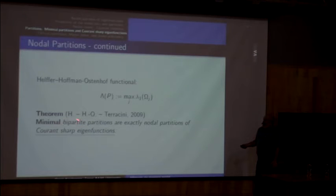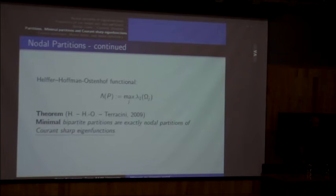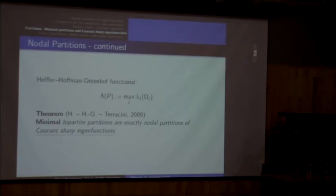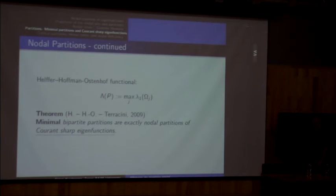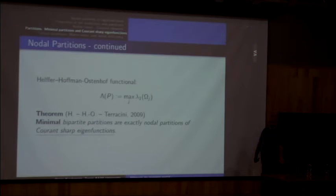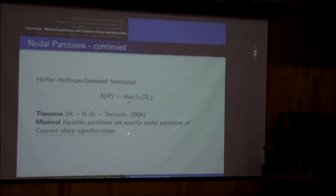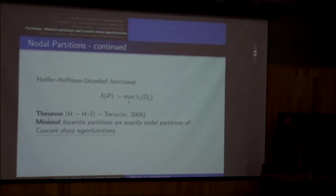They proved an amazing theorem: this functional attains its minimum on the space of partitions with a fixed number of domains. The minimum points, if they are bipartite, are exactly the nodal partitions of Courant-sharp eigenfunctions. So the minimum points of this energy-like functional are exactly all partitions of Courant-sharp eigenfunctions. It is a very hard theorem, requiring proving existence and attainment of the minimum.